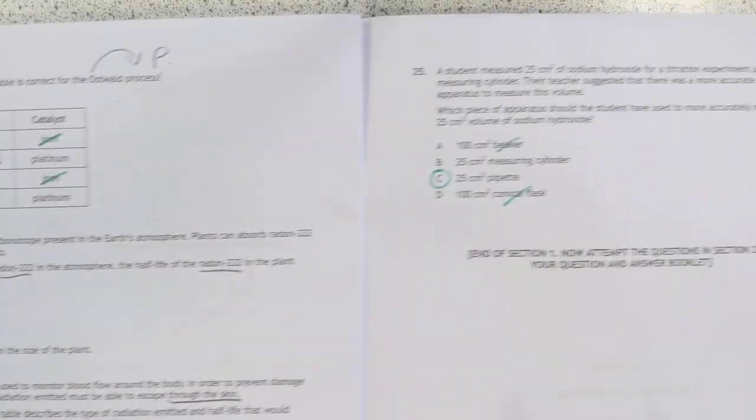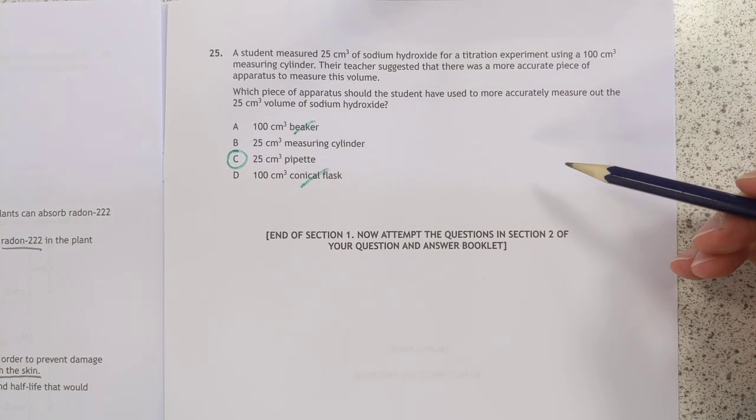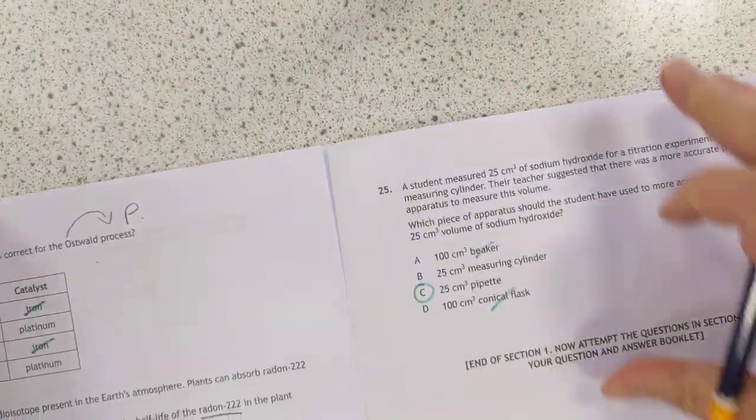So you want a short-ish half-life. Shouldn't be too short, of course. Otherwise it will disappear before you can measure it. Perhaps not a great question. Maybe they should have given numbers to that. Actually, SQA. Maybe you should have given numbers.